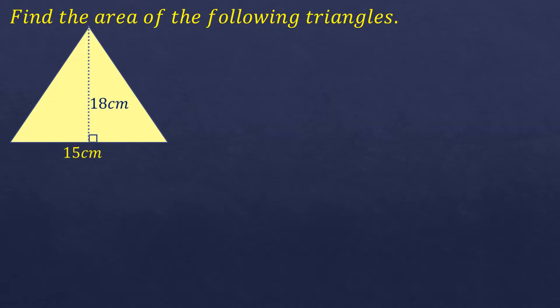Find the area of the following triangles. Here's the first triangle, with a base of 15 centimeters and a height of 18 centimeters. The formula for finding the area of a triangle is the product of base and height divided by 2.